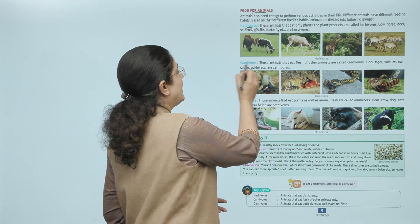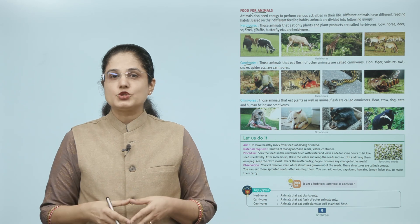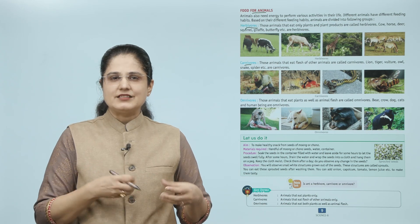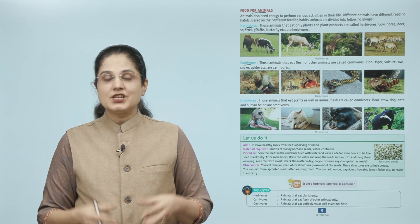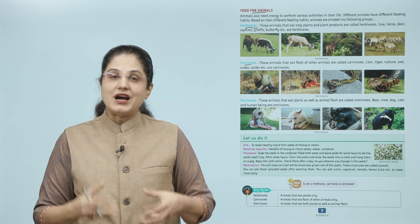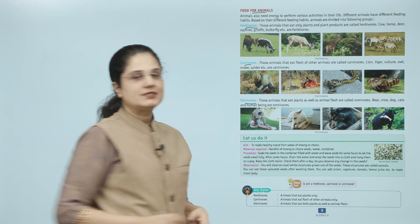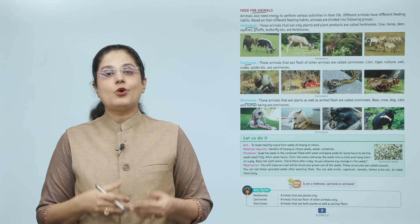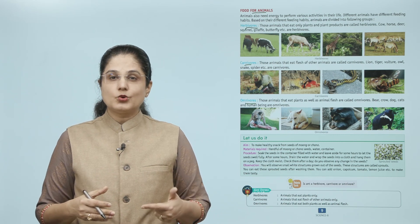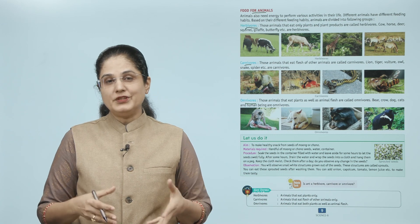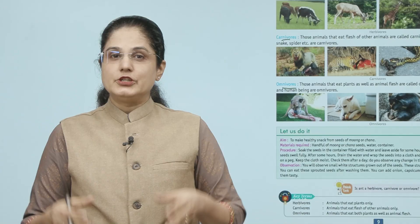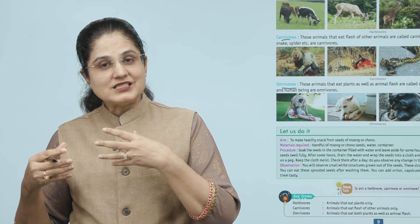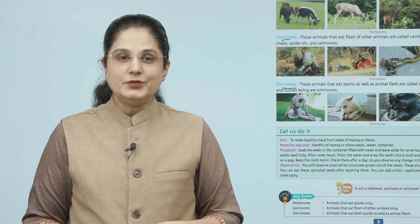Omnivores: those animals that eat plants as well as animal flesh are called omnivores — bear, crow, dog, cats, and human beings are omnivores. Woh saare janvar jo plants bhi khaate hain aur doosre janvaron ka maas bhi khaate hain, unhein hum omnivores kehte hain.